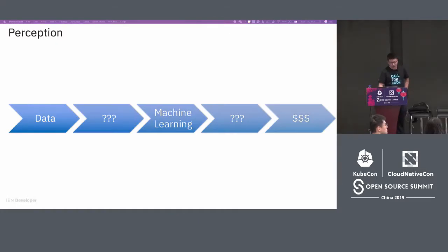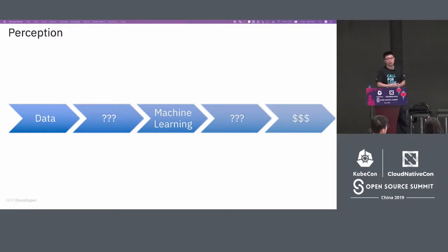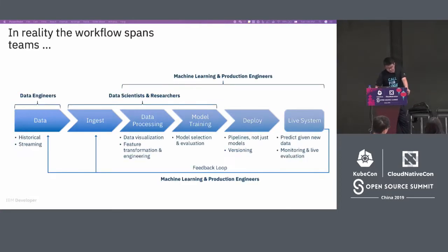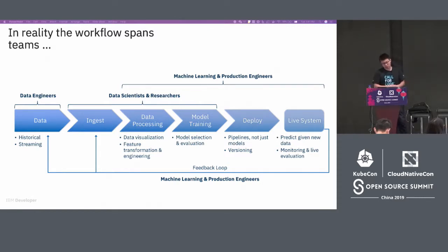I'd like to talk about the whole workflow of machine learning. You may think we have data, we build a model, we make predictions, and then we wait for the results to come out. But actually the process is much more complicated than that. It involves not only one person or a team — it involves multiple teams from different areas, and their coordination and cooperation to complete this whole workflow.